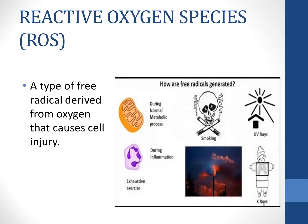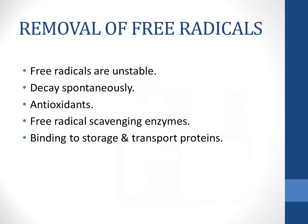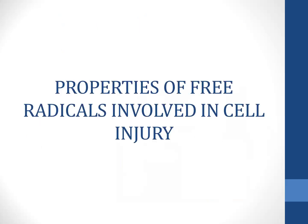Reactive oxygen species are a type of free radical derived from oxygen. They can be derived during normal metabolic processes, during inflammation, during exhaustive exercise, by smoking, radiation, UV rays, x-rays, and by pollution. Free radicals normally are unstable and they either decay spontaneously or are removed by scavenging enzymes and antioxidants present in the body. They can also bind to storage and transport proteins and therefore do not normally cause damage unless they are in increased concentration.